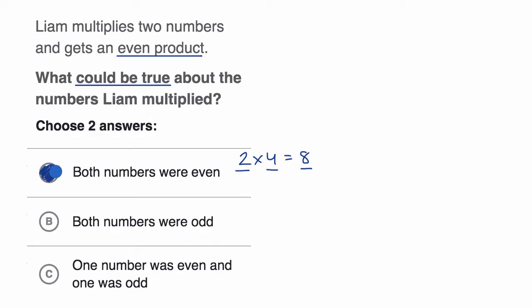Both numbers were odd. You might remember that an odd times an odd is always going to be an odd. Or you could look at a few examples and feel pretty confident that that's the case.